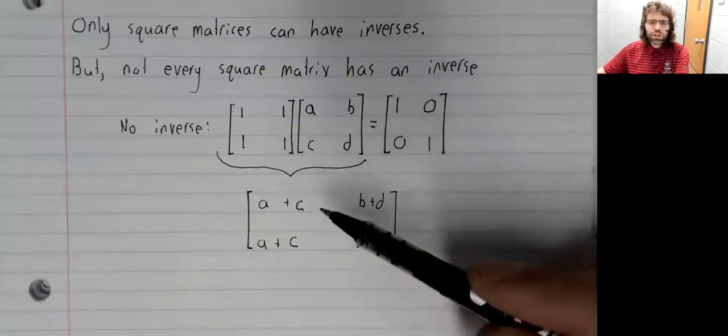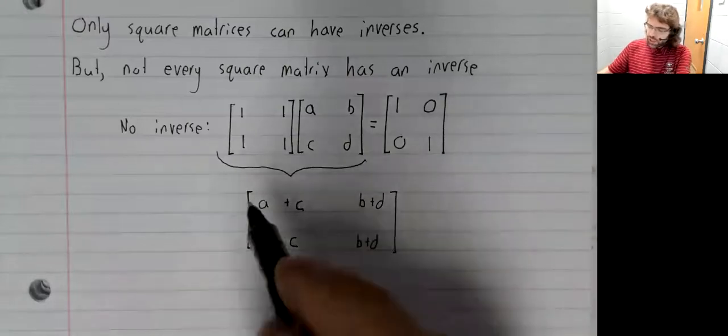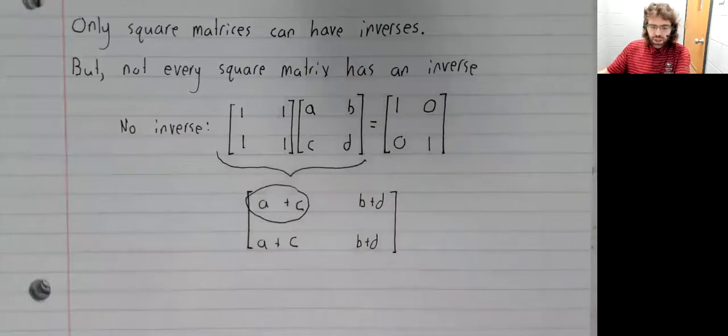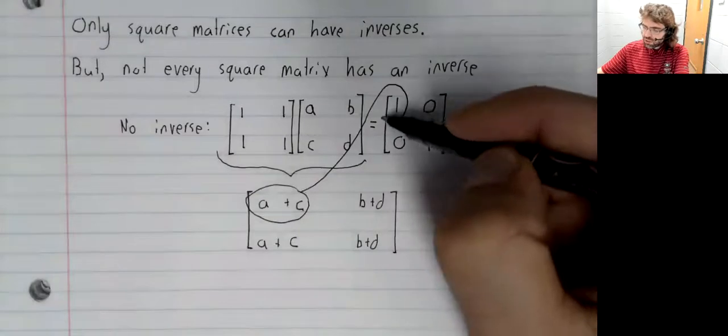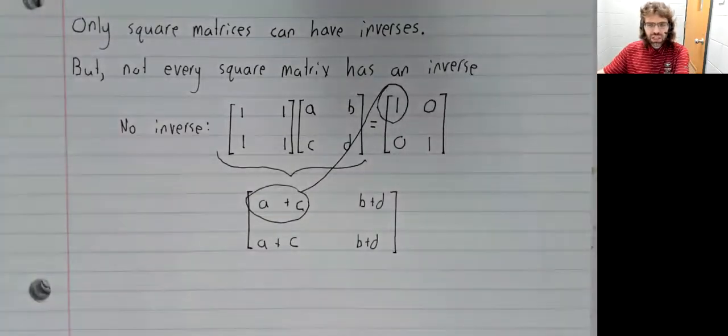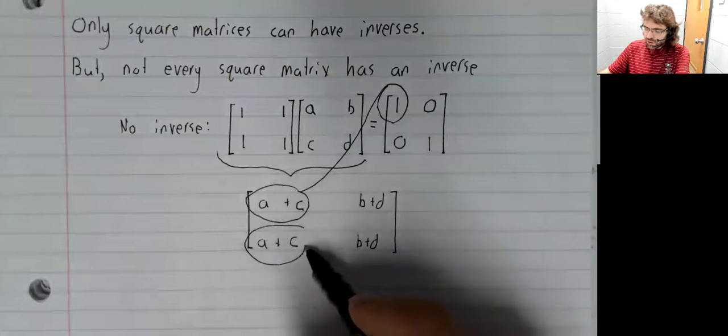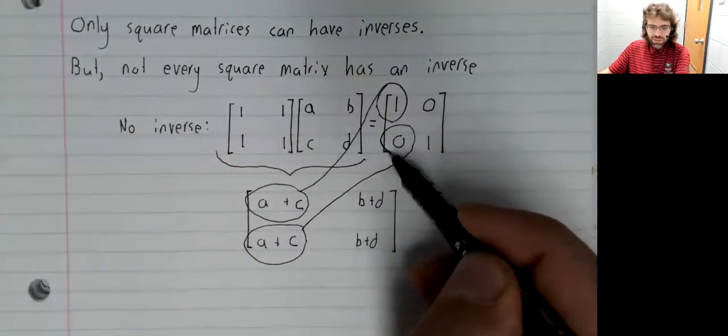Well, how could this equal the identity matrix? In particular, A plus C—for this to be the identity matrix, A plus C has to be one. But also for this to be the identity matrix, A plus C has to be zero.